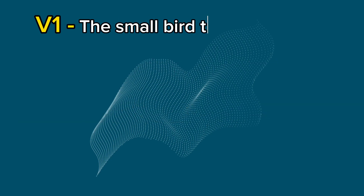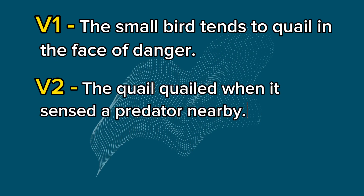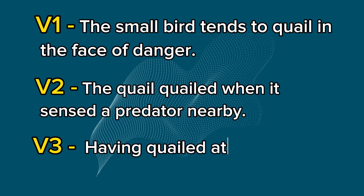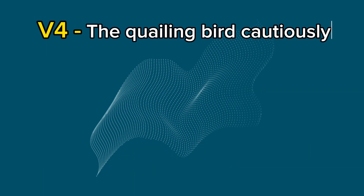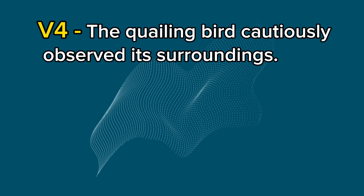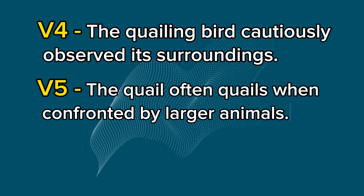V1: The small bird tends to quail in the face of danger. V2: The quail quailed when it sensed a predator nearby. V3: Having quailed at the sudden noise, the quail remained still. V4: The quailing bird cautiously observed its surroundings. V5: The quail often quails when confronted by larger animals.